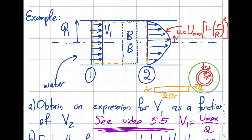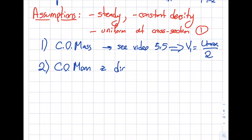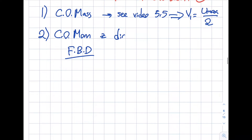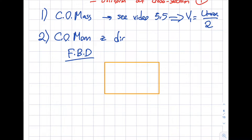Step two is conservation of momentum — it's a vector equation, so I need to pick directions. I have R and theta, and I'll call the axial direction Z. I'll write my equation in the Z direction because that's where the force will be. The first thing I highly recommend is to draw the free body diagram of the control volume — very similar to your dynamics courses.